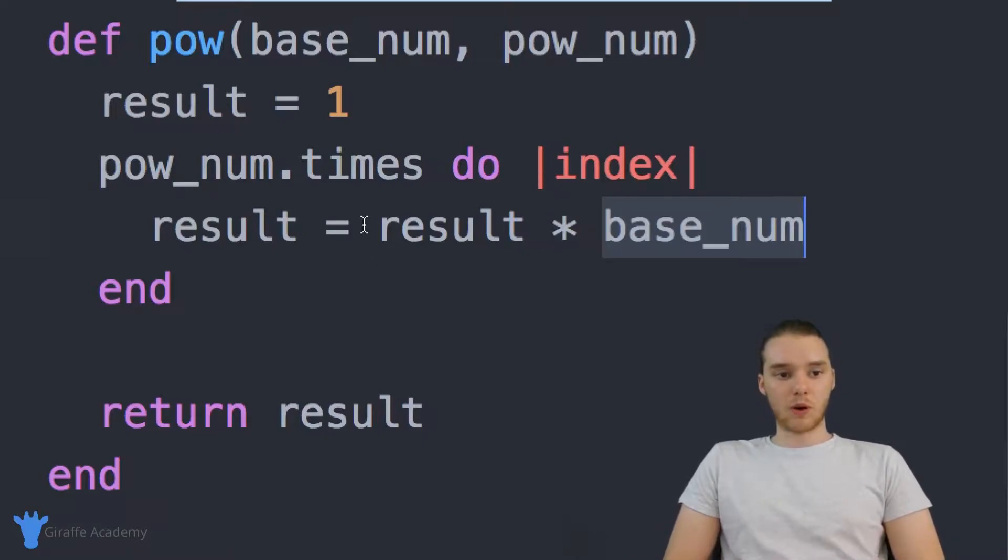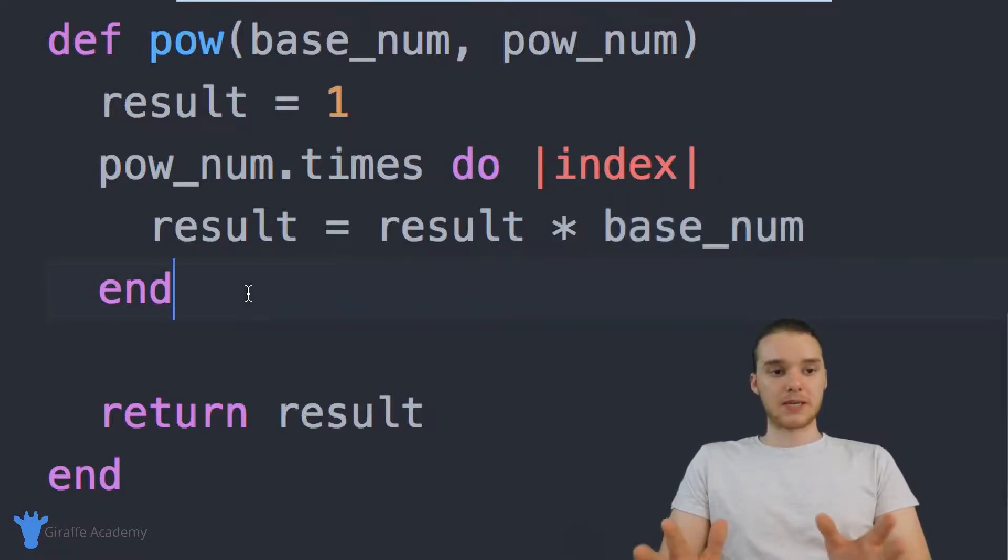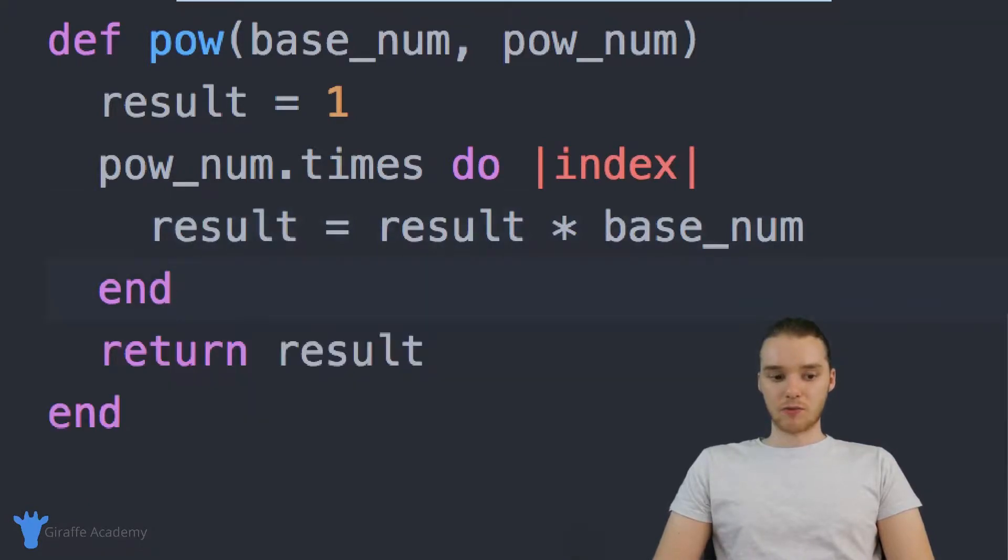Now, it's important to know that this is only going to work for positive number exponents. So if pow_num is a negative number, then this method is actually not going to work. But just for our purposes in this tutorial, let's just assume that we're always going to use a positive exponent. So once we've multiplied result times the base_num as many times as we need to, then we can just return it.